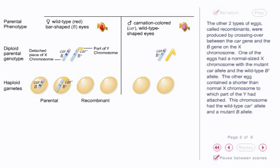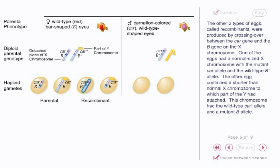The other two types of eggs, called recombinants, were produced by crossing over between the CAR gene and the Bar gene on the X chromosome. One of the eggs had a normal-sized X chromosome with the mutant CAR allele and the wild-type Bar+ allele. The other egg contained a shorter-than-normal X chromosome to which part of the Y had attached, and this chromosome had the wild-type CAR+ allele and a mutant Bar allele.